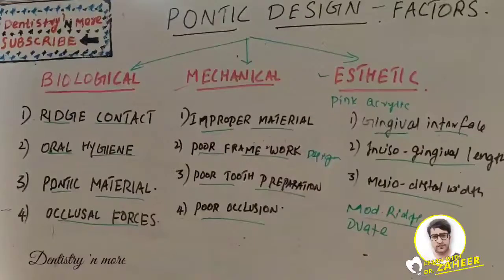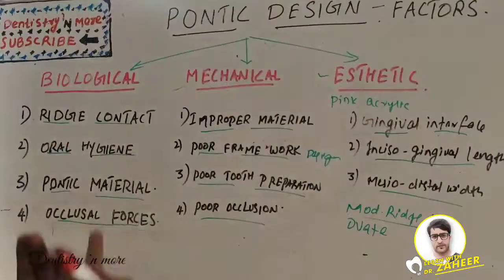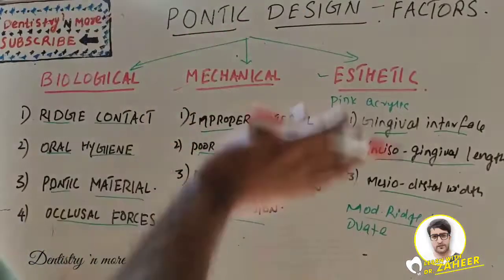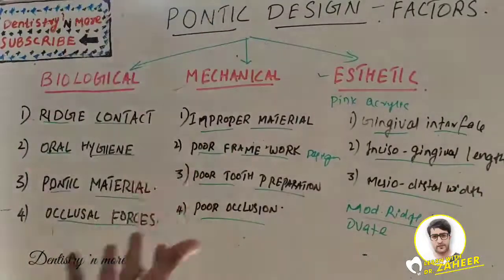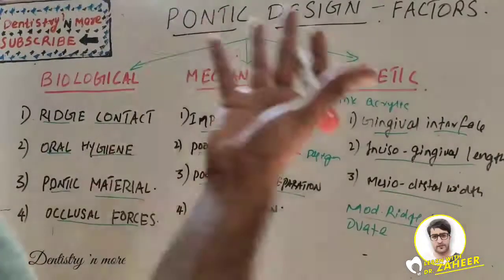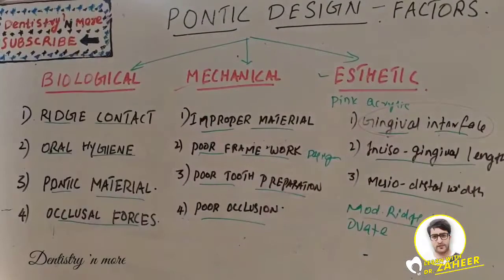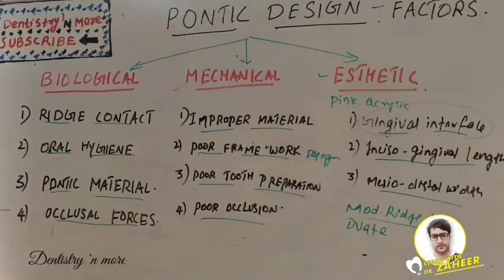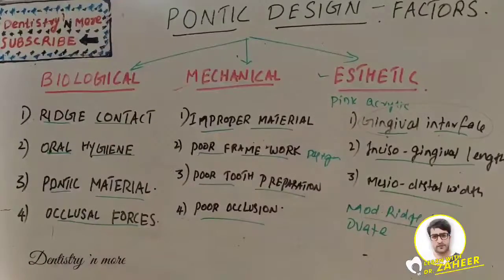Attention should be paid to the contour of the labial surface, as the labial is the most visible part. As the labial surface approaches the pontic-tissue surface, we need to be more careful so that it looks like a natural tooth. This pontic-tissue junction is the most important part of the gingival interface.